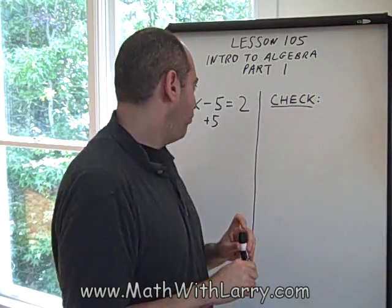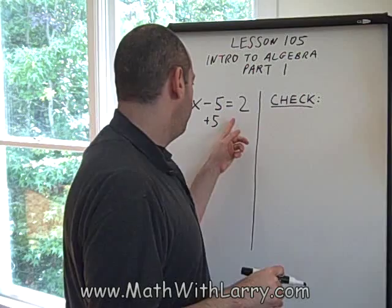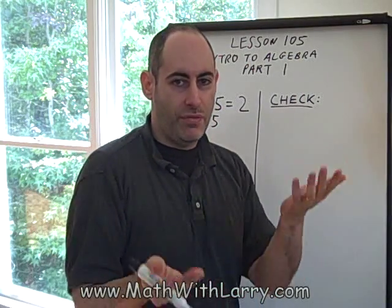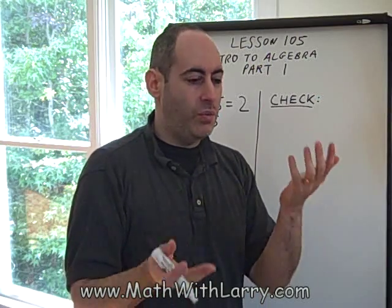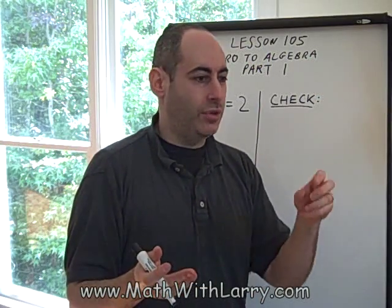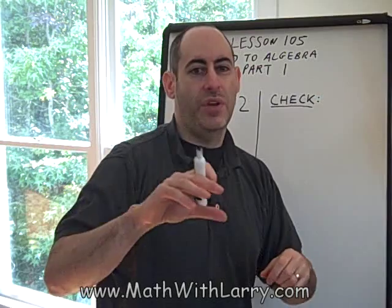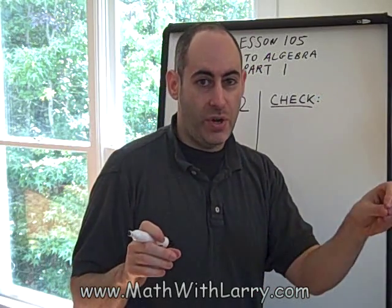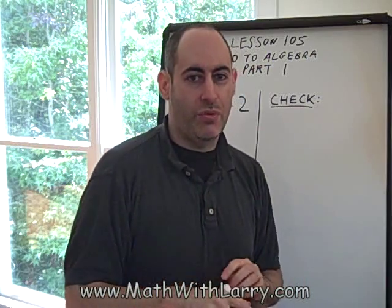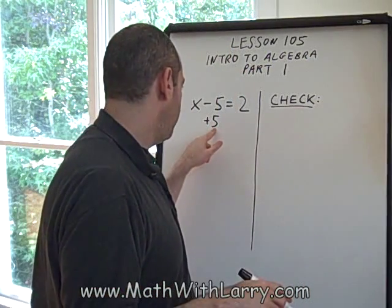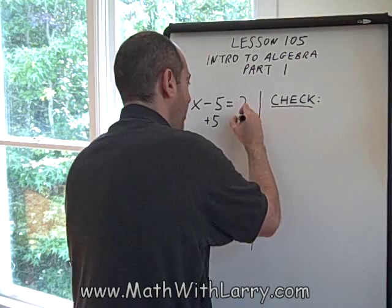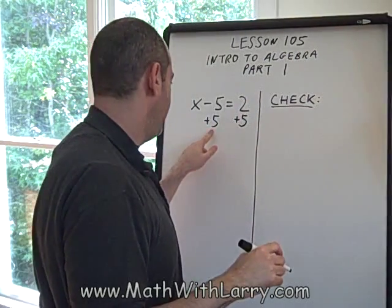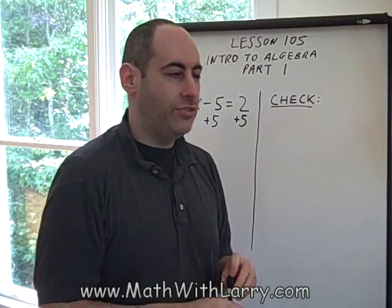It's very important to understand that in algebra, whatever we do to the left side of an equation, we must do to the right. Think of the old-fashioned balance scale — we have to keep it in balance. If we're going to add weight on the left, we have to add the same weight to the right. So the moment I put plus 5 here, I have to immediately put plus 5 on the other side. I did the same thing to the left as I did to the right.